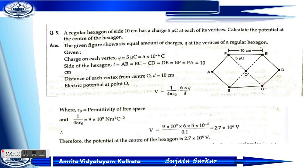Problem 5: A regular hexagon of side 10 centimeters has a charge of 5 microcoulomb at each of its vertices. Calculate the potential at the center of the hexagon. The six sides A, B, C, D, E, F are all 10 centimeters. The electric potential at center O is V = (1/4πε₀)(6Q/R), where 1/4πε₀ = 9×10⁹ N·m²/C². After putting the values, V = 2.7×10⁶ volt.